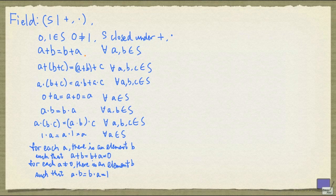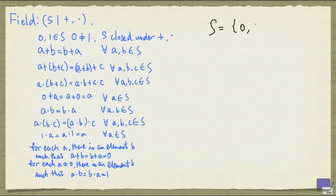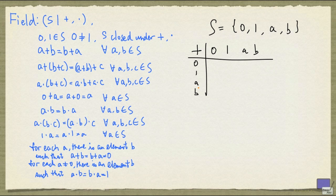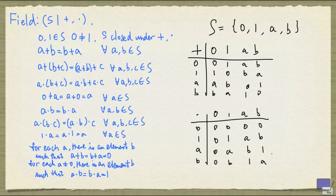The example that we're going to look at, unlike the rationals, has only finitely many elements. The set S is given by four elements: 0, 1, A, and B. Each of the operations is defined by a table. For plus, we have this table, and for times, we have this table.